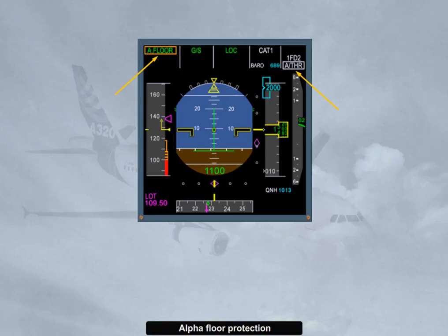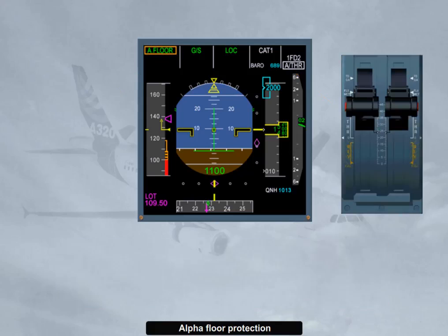Alpha floor in green is displayed as the autothrust mode. The alpha floor function is available from lift-off down to 100 feet radio altimeter. Note: the alpha floor protection is lost in case of combinations of failures, or if at least one thrust lever instinctive disconnect push button is pressed for more than 15 seconds. The alpha floor protection is also lost in case of engine out when slats and flaps are extended, or in alternate law or indirect law.